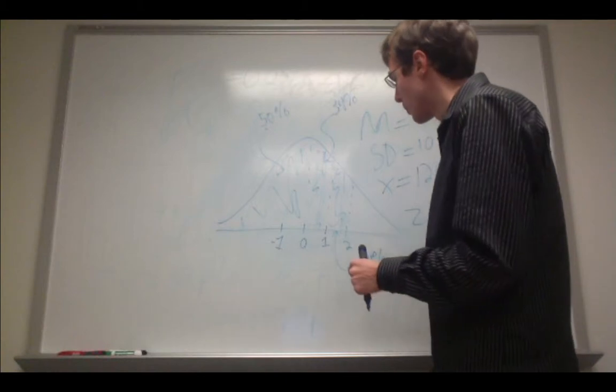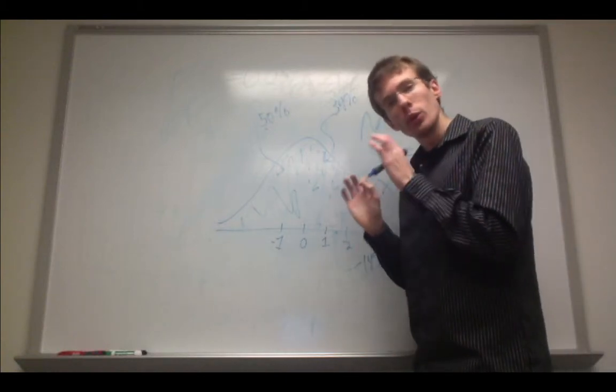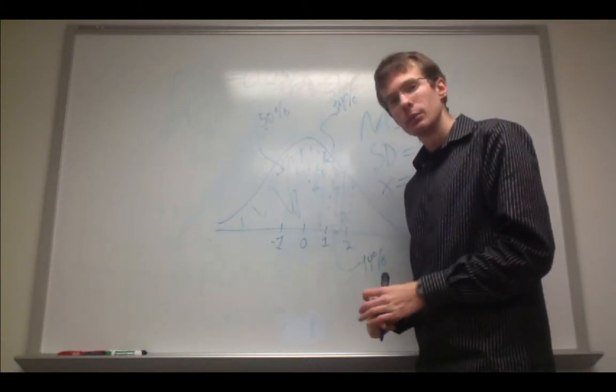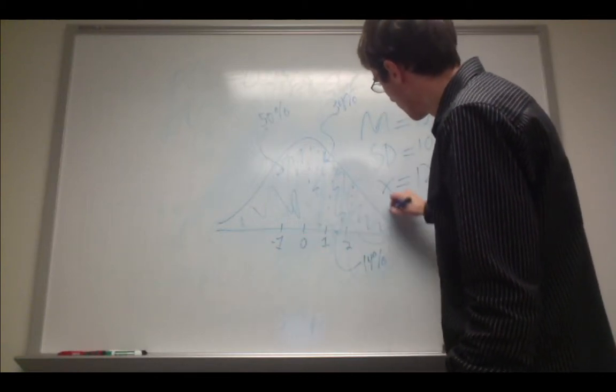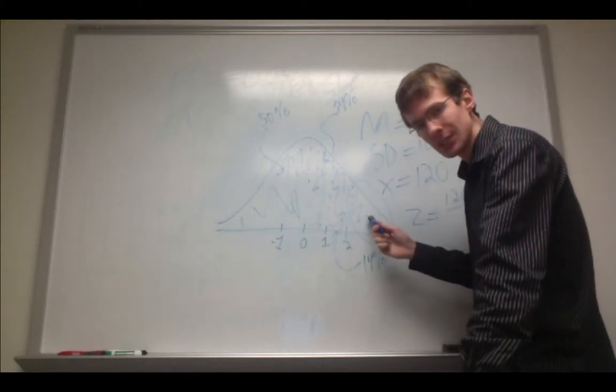And we want to know what is the probability that they have scored 120 or greater. It's a tail problem, so we want to know what is the area in this tail right here.